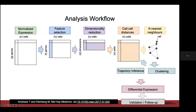This is the overall workflow for analysis of your single-cell RNA-seq experiment. First you'll normalize the expression, then do feature selection and dimensionality reduction to remove as much noise as possible. Then you'll calculate cell-cell distances, convert that to a k-nearest neighbor graph, do clustering or trajectory inference, and then do differential expression either between conditions, clusters, or across your trajectory.